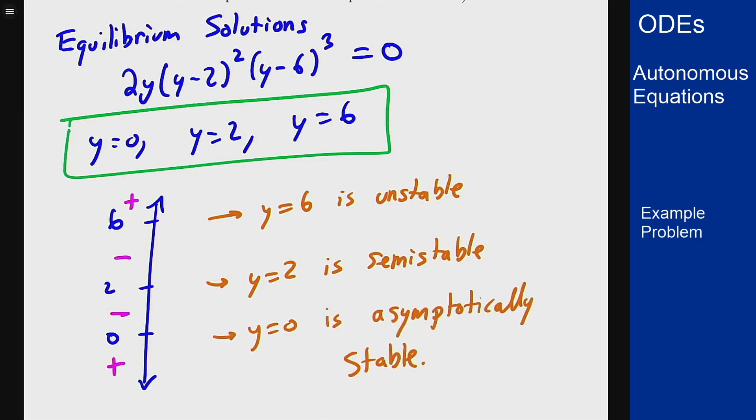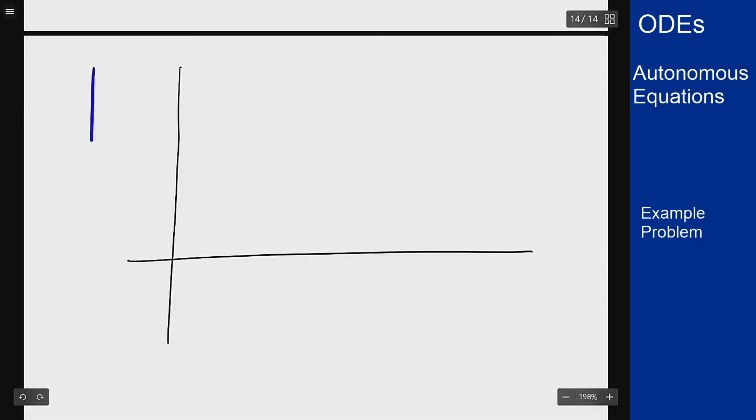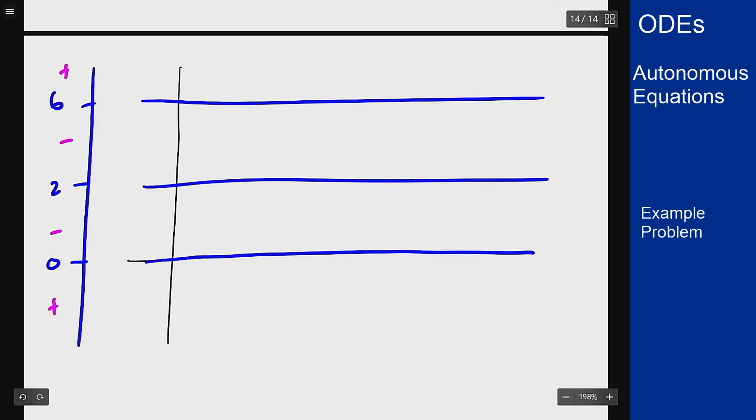Now we can use this information to draw a sketch of some of the solution curves for this equation. There are some axes. Here is my phase line. I can draw in the 3 equilibrium solutions first, and then fill in other curves following the directions provided by the phase line.